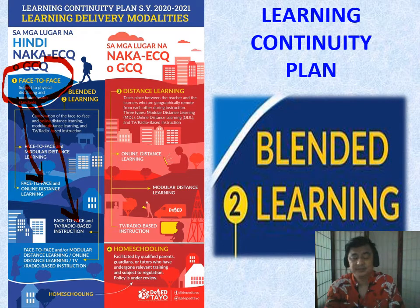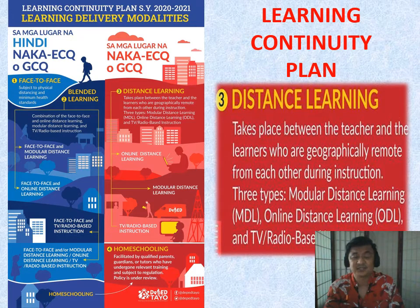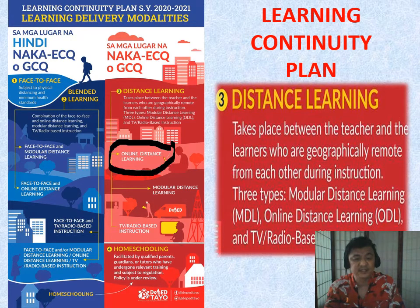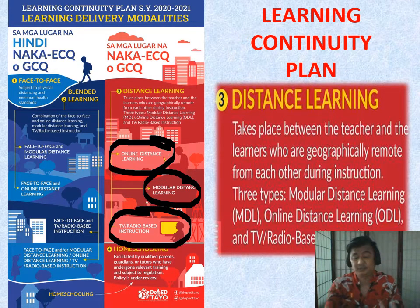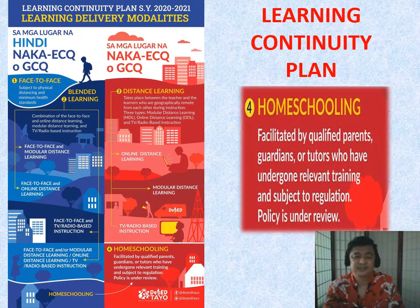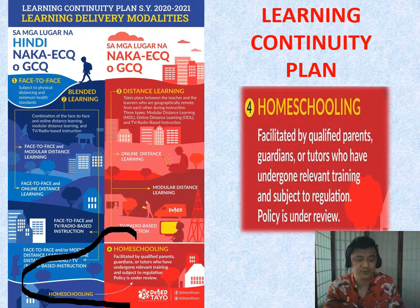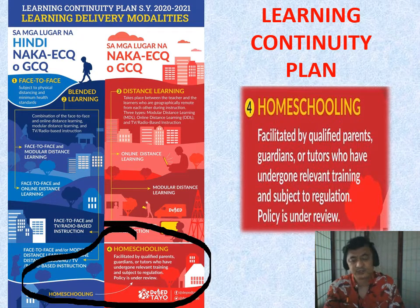If blended learning isn't possible given the situation, pure distance learning is used — either fully online, fully modular, or watching educational TV or radio programs, because in-person meetings are not allowed. Homeschooling is flexible for both situations and can be used in different circumstances, but parents need to be trained and willing to help in the child's education.